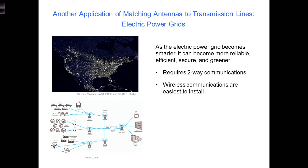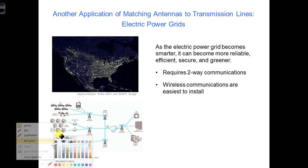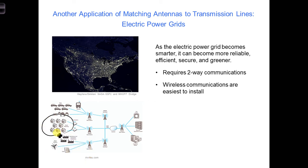There is a lot of interest, for example, in making the power grid smarter so that it can be more reliable, efficient, secure, and greener. However, to make the grid smarter, a lot of information needs to be collected, shared, and analyzed. For example, energy usage in office buildings and houses needs to be collected, and how much energy solar panels and wind turbines are generating needs to be collected. It's a lot easier to collect this information wirelessly rather than installing a bunch of infrastructure physically connecting all these different components.